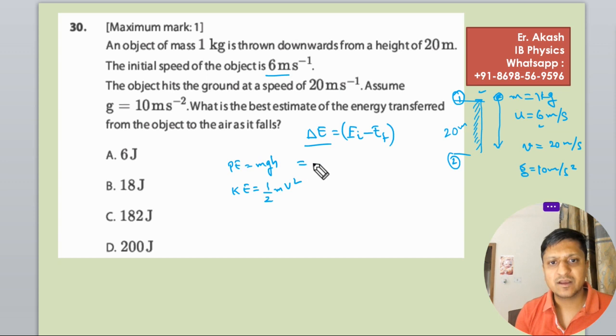So mgh, h is 20 meters, so 200 is the potential energy and half into 1 into velocity 6, 6 into 6, that is 18. So the total is 218 joules.